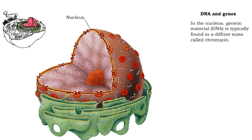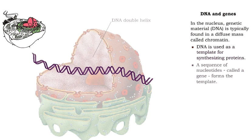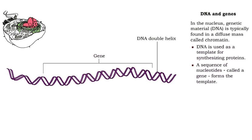The process of protein production begins in the nucleus. During most of a cell's lifespan, the DNA molecules are found in a diffuse mass called chromatin. DNA is used as a template for synthesizing proteins. The template is in the form of a sequence of nucleotides called a gene.